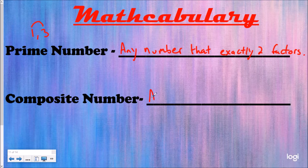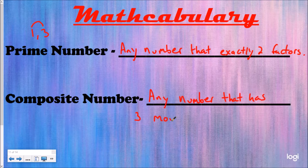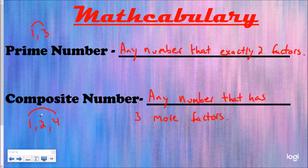A composite number is any number that has three or more factors. An easy example for this would be four. If I made my factor rainbow for four, I'd have one, two, and four — one times four, four times one, and two times two. So I have three factors that can make four, which means four is a composite number. So if you know the definitions, all you need to do is find the factors of these numbers and then you can label it as prime or composite.